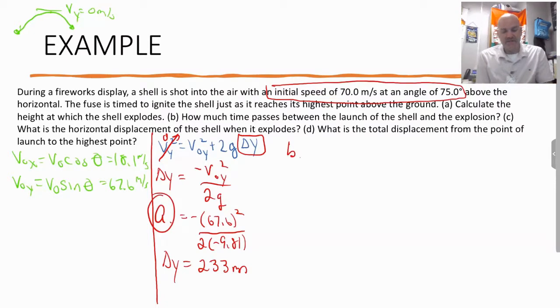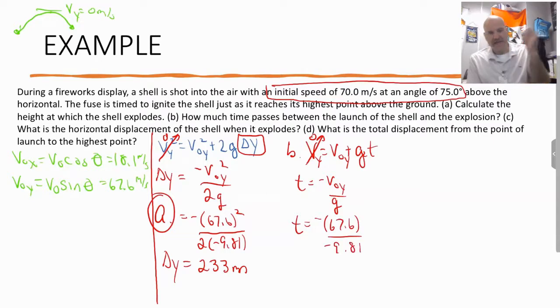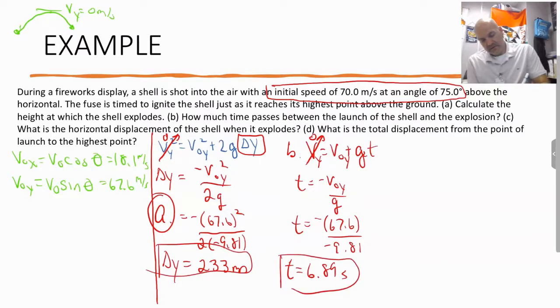Part B. How much time passes between the launch of the shell and the explosion? So you can use the simple equation, but I need to rewrite it in free fall. So again, that's zero. And so this is going to be t equals negative voy over g. So negative 67.6 divided by negative 9.81. Again, it's okay it's negative because you have negative divided by negative.